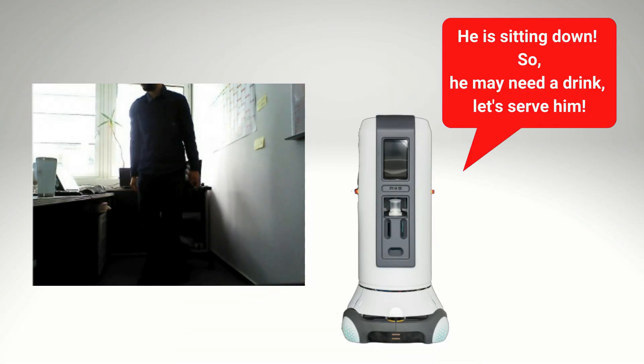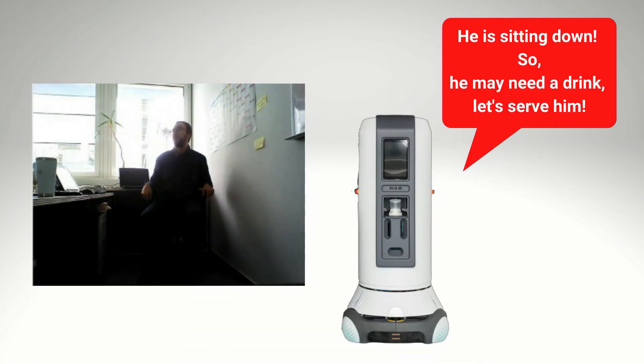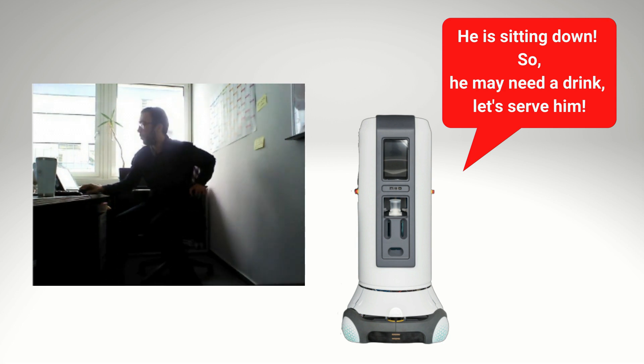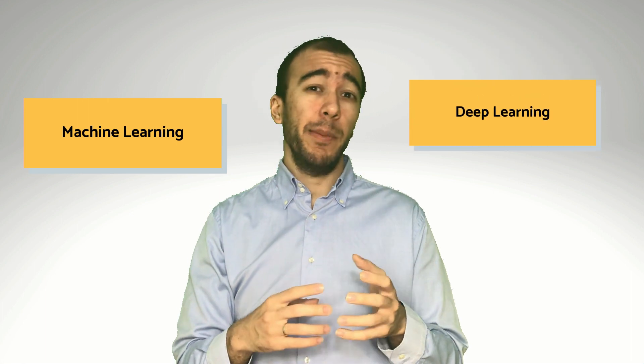My developments allow these robots to identify and detect individual persons by using 2D and 3D sensors. Furthermore, they can answer the following questions by using my software: Where are the people? What are they doing? To understand the person's activities, the robot uses a combination of machine learning and deep learning algorithms.